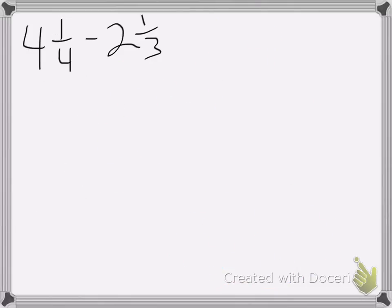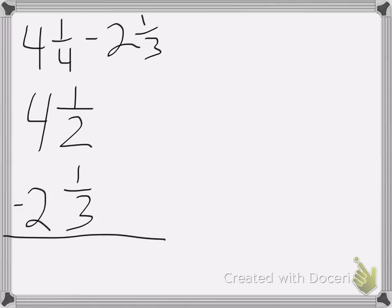Here we've got another problem. 4 and 1 fourth minus 2 and 1 third. So again, I need to find a common denominator. And that common denominator will be 12.